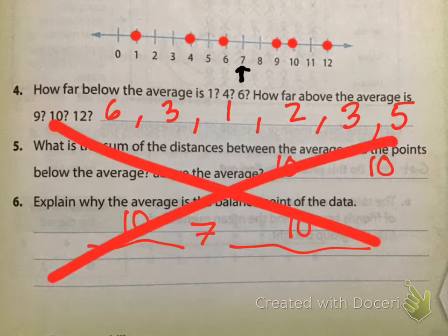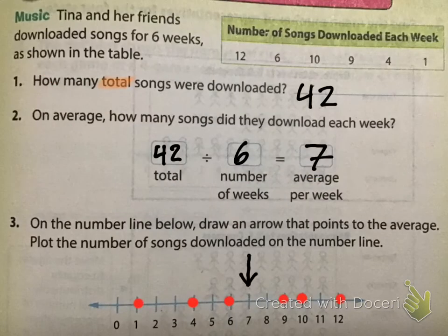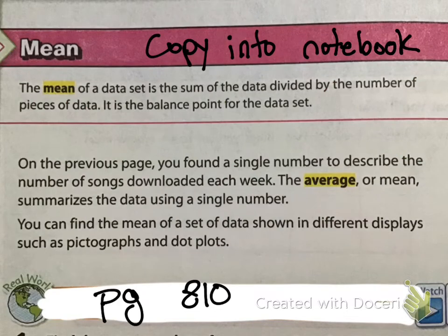I feel like this part makes it a little bit more confusing, so I don't like the concept of this. I really just prefer the fact that we learn what a mean is. So copy this into your notebook. The mean of a data set is the sum of the data divided by the number of pieces of data. It is the balance point for the data set. So we see this sum, and then we see divided. That means we add, and then we divide.